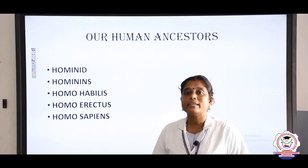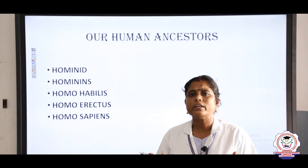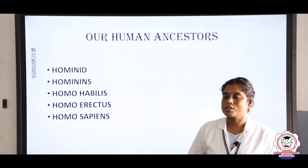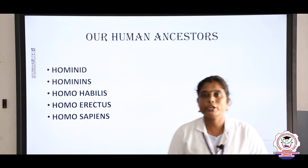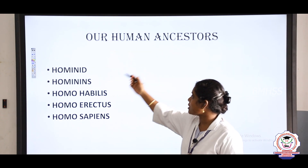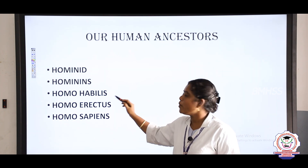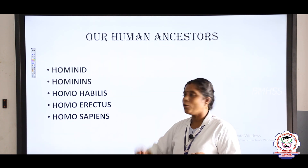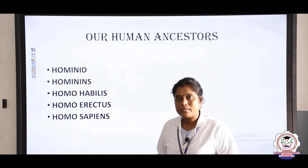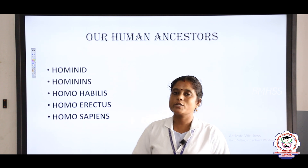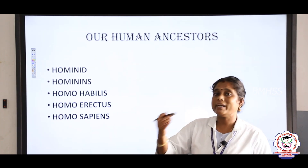Our human ancestors can be classified into various species according to their physical features. According to their physical features, they can be divided into: hominid, hominens, Homo habilis, Homo erectus, and Homo sapiens — these five species of our human ancestors.